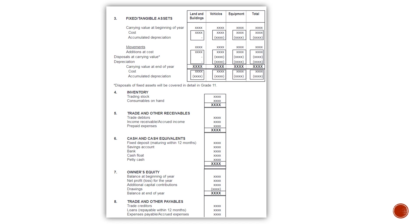Note number four: inventory. Inventory is your trading stock and your consumables on hand. Remember, consumables on hand was an expense account, and at the end of the year if you realized you didn't use it, you took it over to an asset account — that's why it forms part of your inventory now.